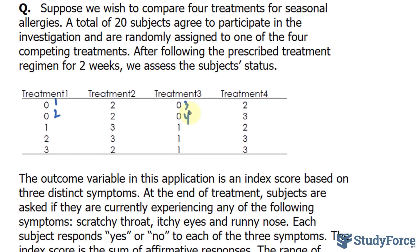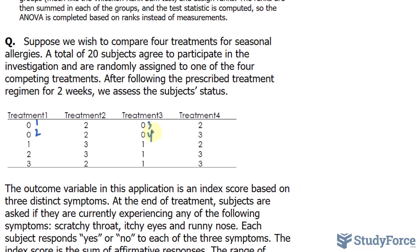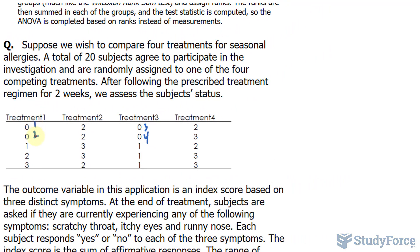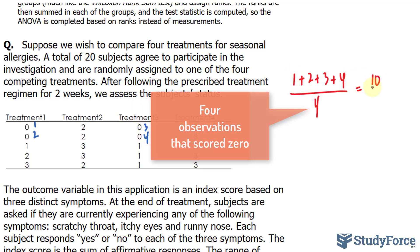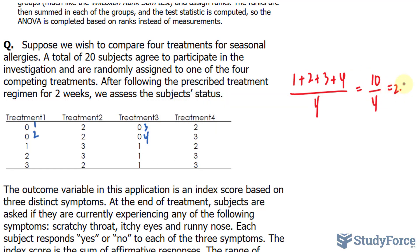They all share a score of zero. So what we do is we add up one, two, three, and four. One plus two plus three plus four. And we divide it by the number of observations. The top is equal to ten divided by four is 2.5. So instead of writing one, two, three, and four, they will all have a rank of 2.5.